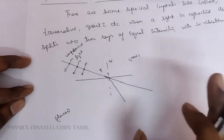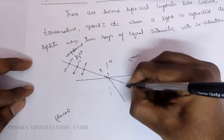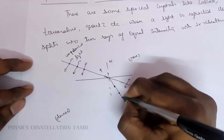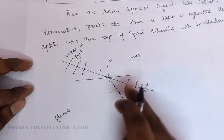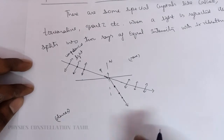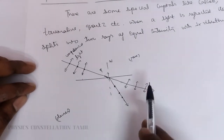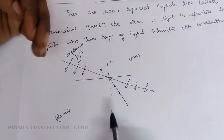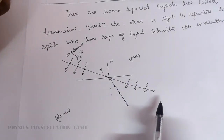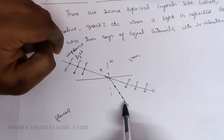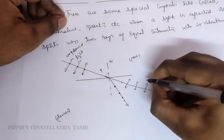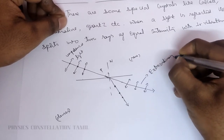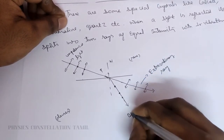So now we are going to polarize the unpolarized light. One light is polarized in this way, and the other light is polarized in this way. The ray that passes without any deviation is called the extraordinary ray. The ray that deviates as it enters the denser medium is called the ordinary ray.